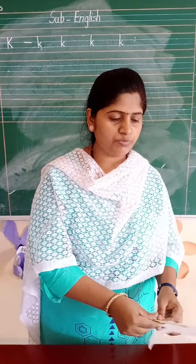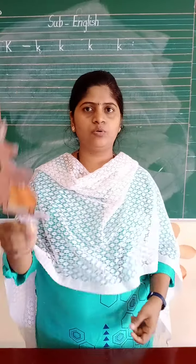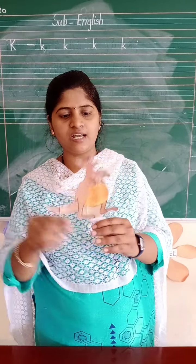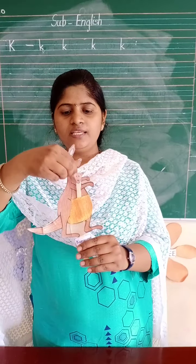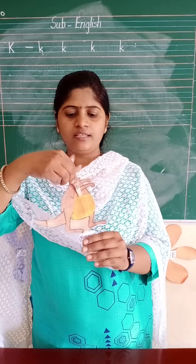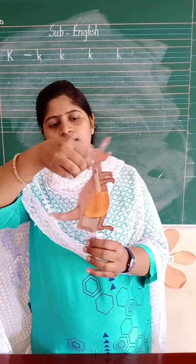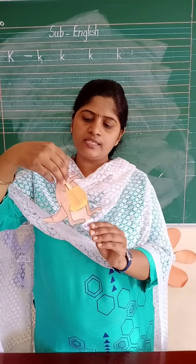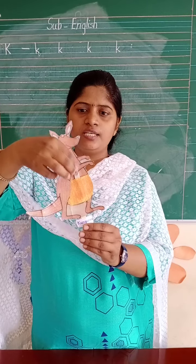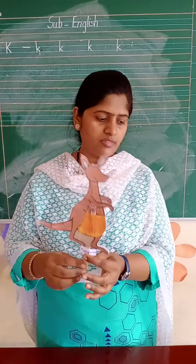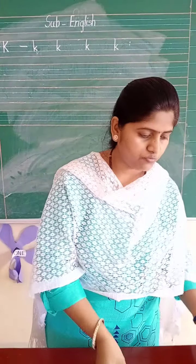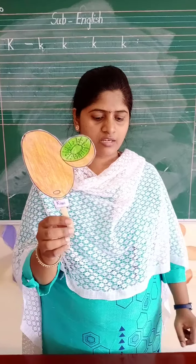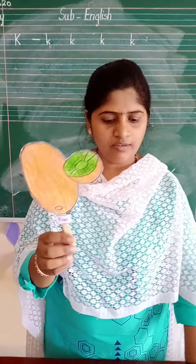Say the sound and the object's name also — kangaroo. See here is the baby, see in her pouch. Here is the mother and the baby is here in the pouch. Then, which fruit is this? Your favorite fruit? Yes — kiwi.